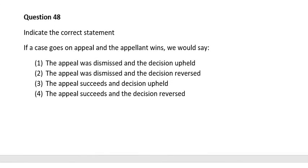Question forty-eight. Indicate the correct statement. If a case was on appeal and the appellant wins, we would say: number one, the appeal was dismissed and the decision reversed; number three, the appeal succeeded and the decision reversed; number four, the appeal succeeded and the decision reversed. The correct answer is number four: the appeal succeeded and the decision reversed.